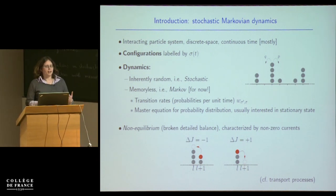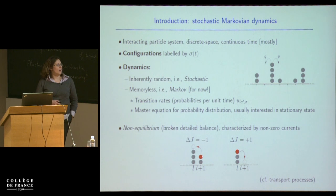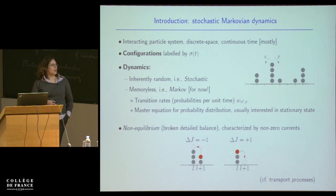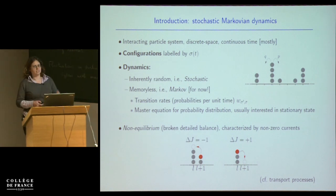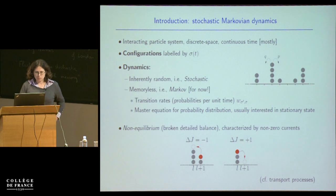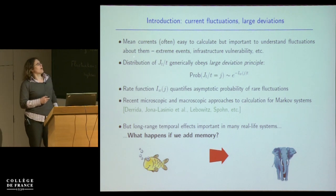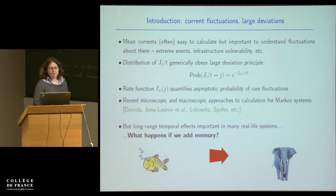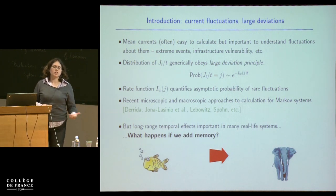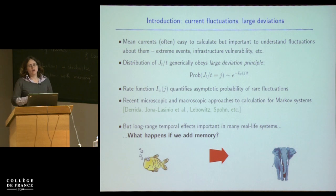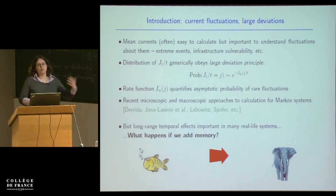In non-equilibrium the stationary states are characterised by flows of particles, just like the flows of cars, ants, or motors we saw at the beginning. The simplest way to define a current is to take two sites on the lattice and count minus one when a particle hops backwards and plus one when it hops forward, giving an integrated current. It's like standing by a road counting the net number of cars that go past. Often it's relatively straightforward to calculate the mean of such a current, but it's also important and interesting to understand the fluctuations about the mean.